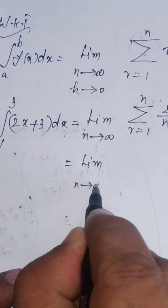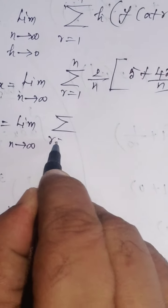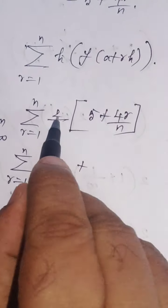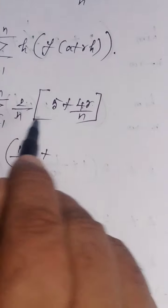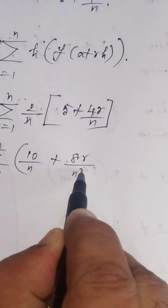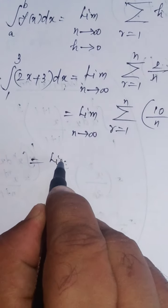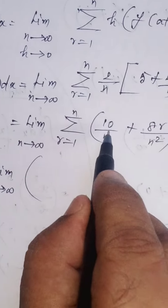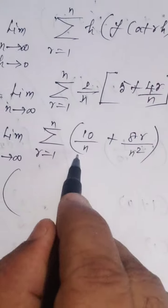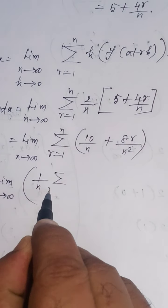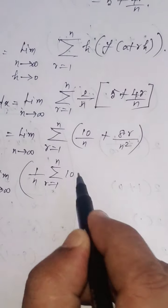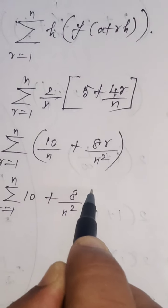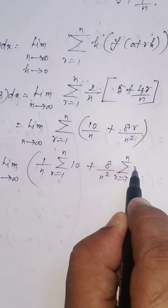Limit n tends to infinity, sigma r equals 1 to n of (2/n) times (5 + 4r/n). Multiplying: 2 times 5 is 10, so 10 by n; and 2 times 4r by n squared gives 8r by n squared. This equals limit n tends to infinity, which can be separated as: (10/n) with sigma r equals 1 to n of 10 inside, plus (8/n²) with sigma r equals 1 to n of r inside.